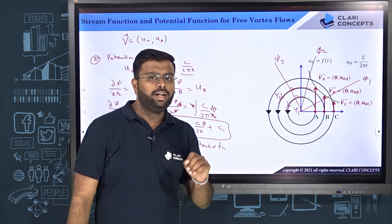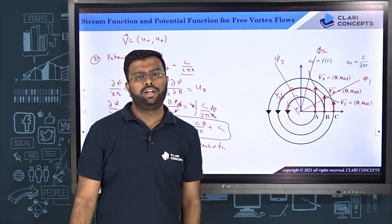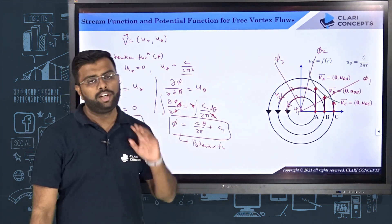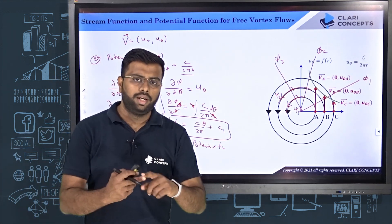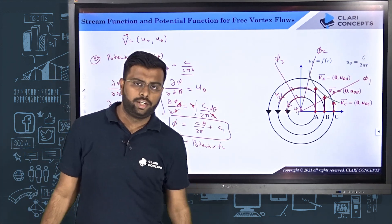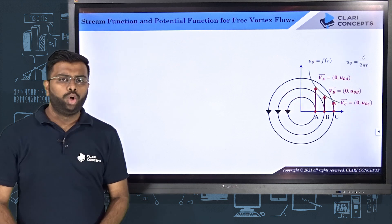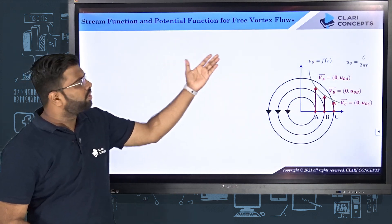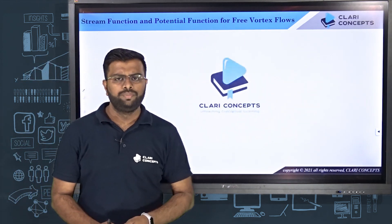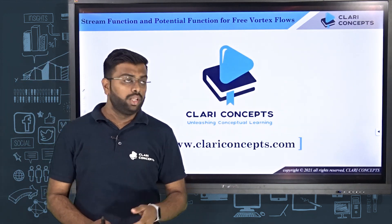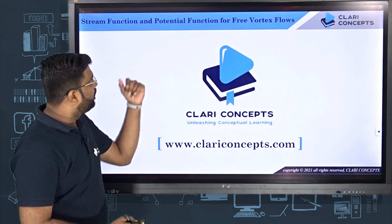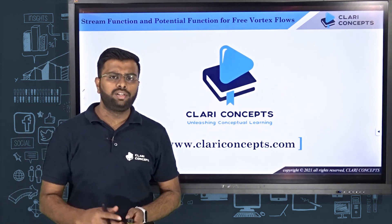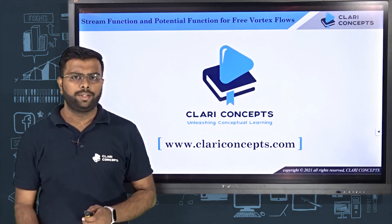This orthogonal intersection holds at all points unless it is a singular point where velocity is not defined. Stream function and potential function lines always meet at 90 degrees. I hope you understood the stream function and potential function for uniform flow and free vortex flow. Thank you so much, see you in the next class.